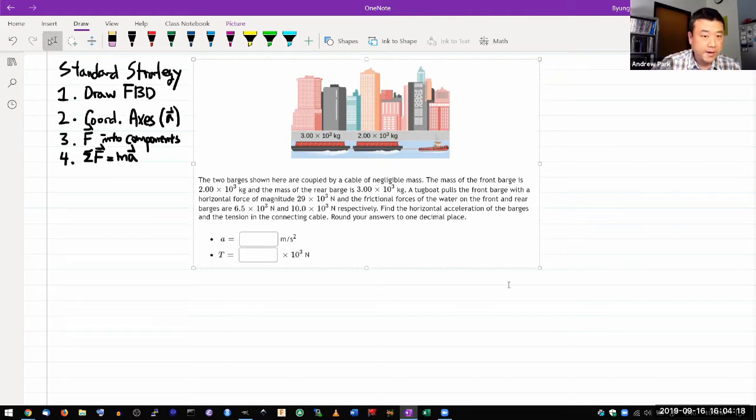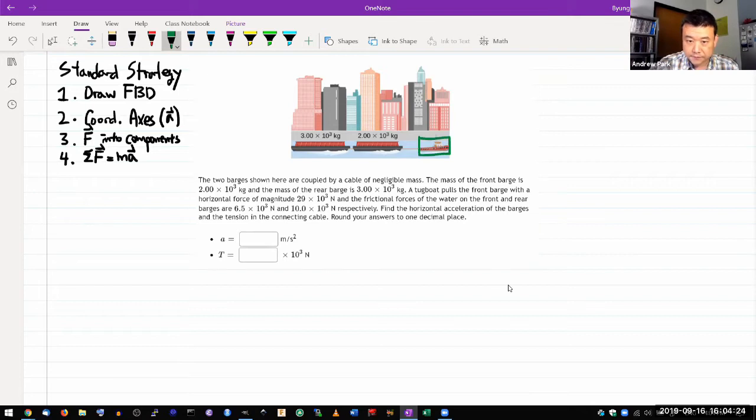This question actually has three objects here. There's the tugboat pulling stuff, and there's a barge here, and there's another barge here. And let me give them labels. This is going to be M1. This is going to be M2. So it says the two barges shown here are coupled by a cable of negligible mass. The mass of the front barge is M1 here, and mass of the rear barge is this mass here. Very light for a barge, isn't it?